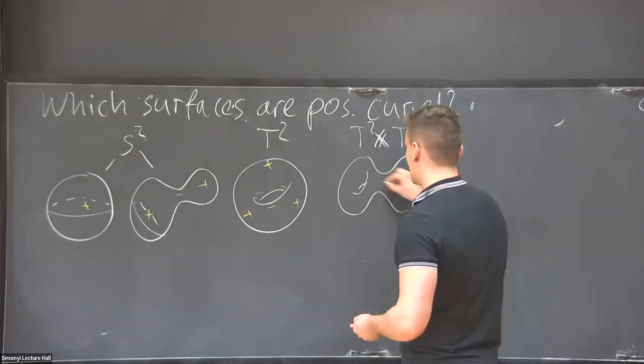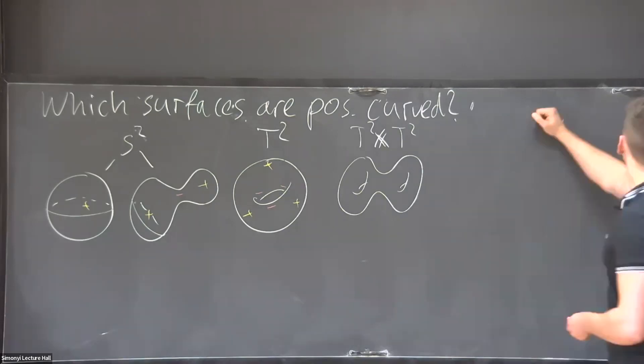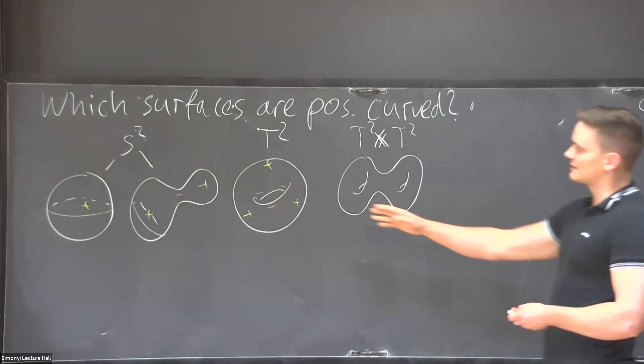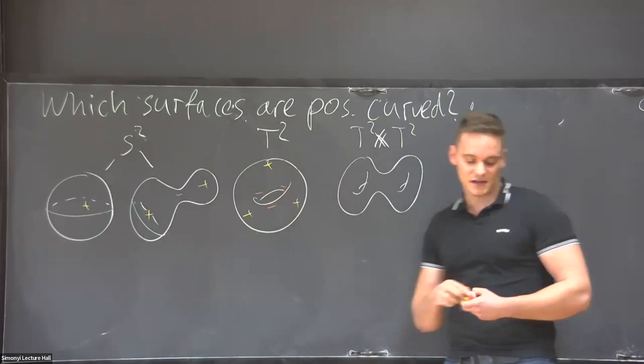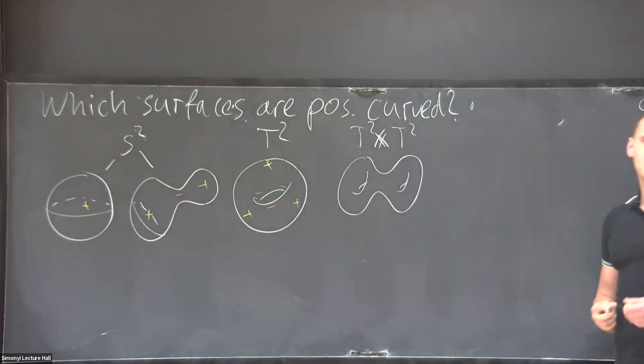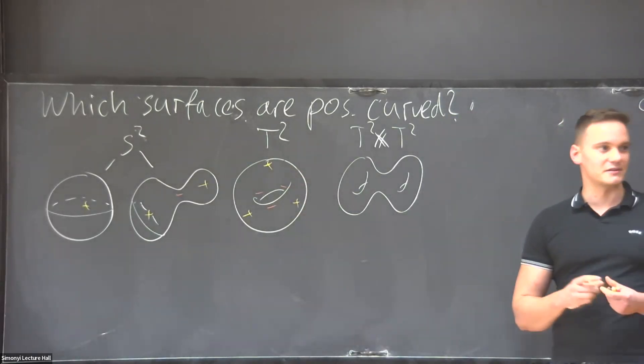The same thing we can also ask for more complicated topological spaces. But then the situation will look very similar. And here for this question whether we can make the torus positive curved, the answer is no, and that follows from one of my all time favorite theorems, the Gauss-Bonnet theorem.